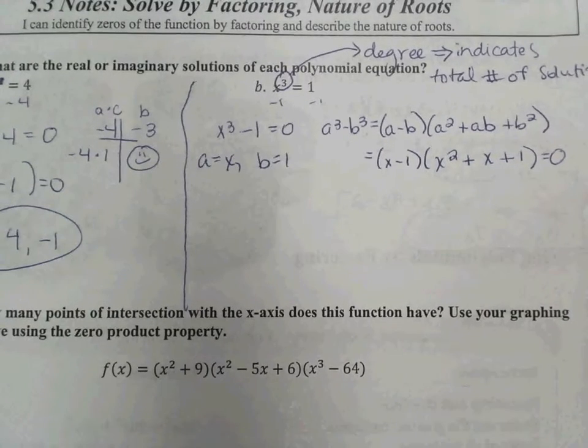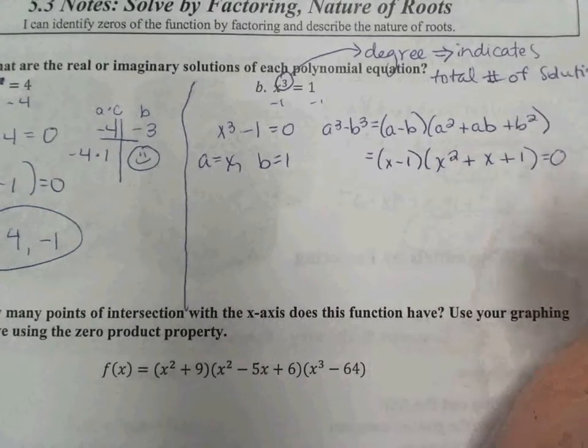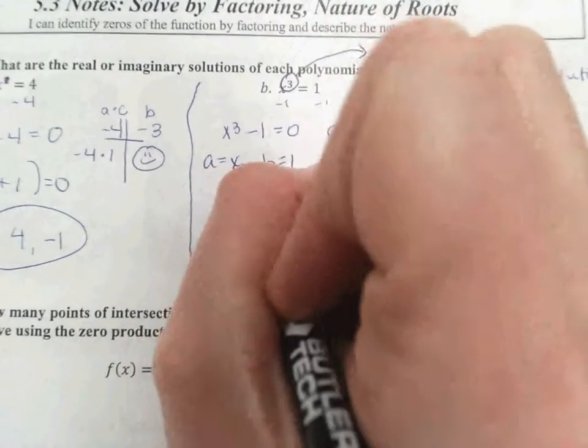We set that equal to 0. Right away you go, oh, there's the 1. We already knew about that guy. So we already know one of our solutions is 1.